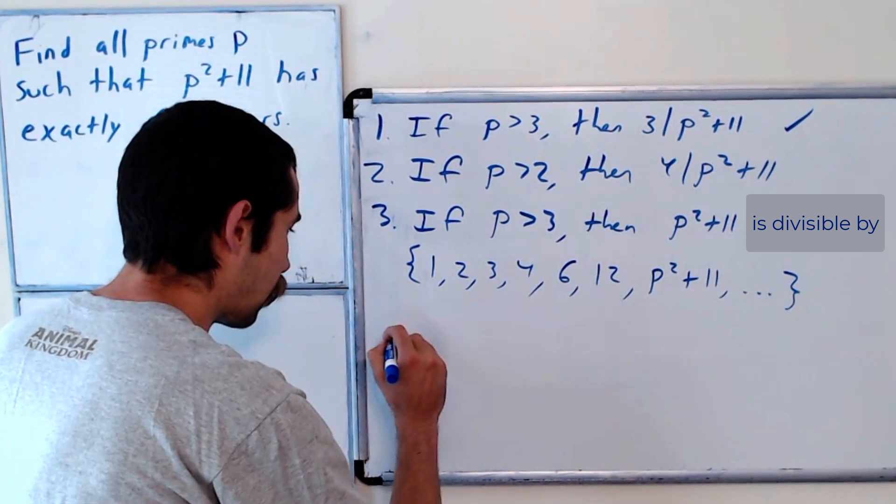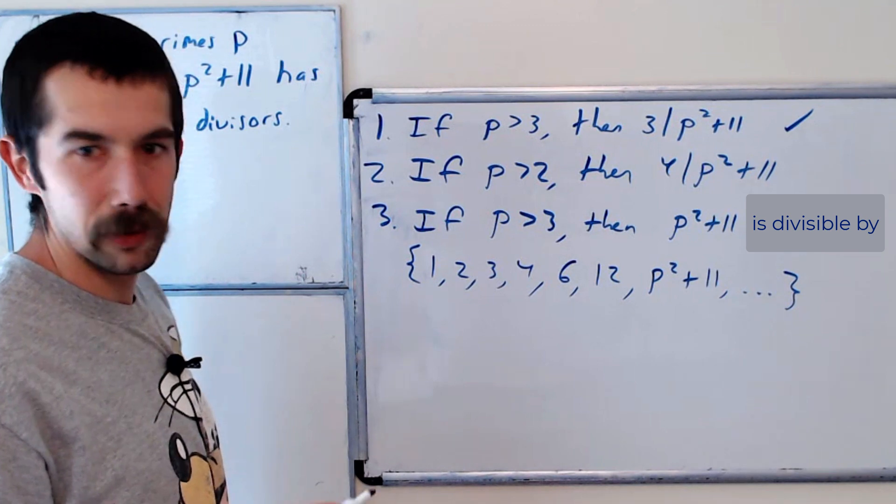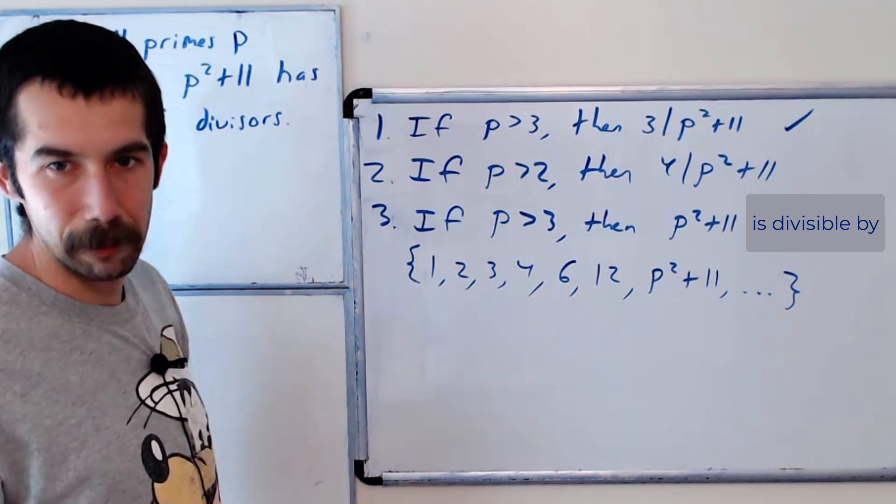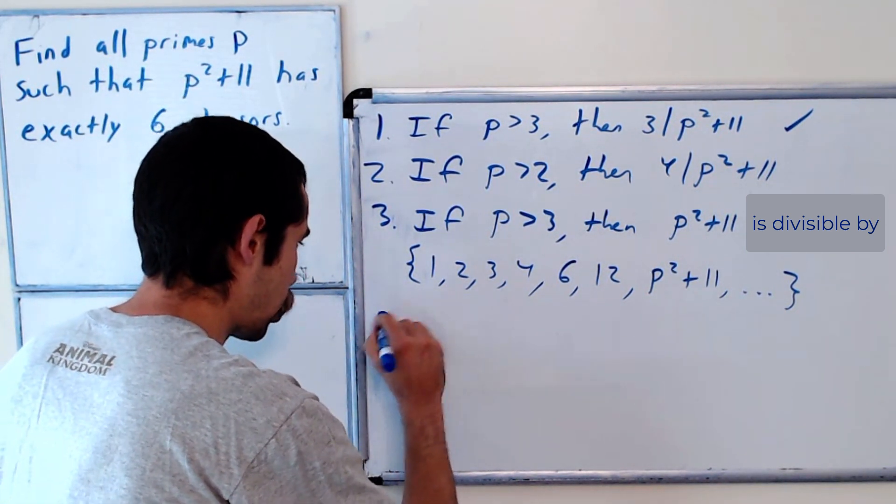So we don't have to check any prime bigger than 3. So we just have to check what are the divisors of 2 squared plus 11, and what are the divisors of 3 squared plus 11. And then we're done with the problem. Whatever one has 6 divisors is our answer. Okay, so let's say what if p equals 2?